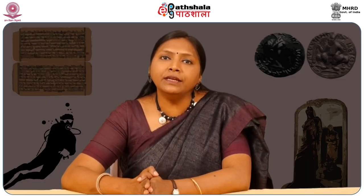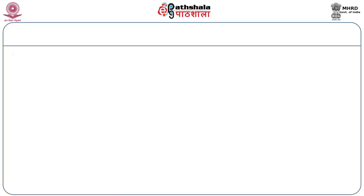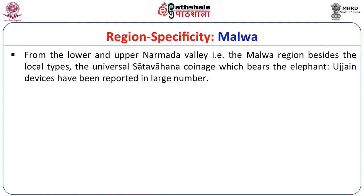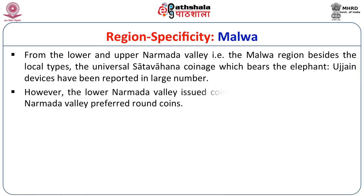Interestingly, the Satavahanas seem to have issued coins with a new weight standard, as their coins were considerably lighter than those of the Duttas. Moving to the territory of Malwa in Madhya Pradesh, from the lower and upper Narmada valley, besides local types, the universal Satavahana coinage bearing the elephant and Ujjain devices has been reported in large numbers. The lower Narmada valley issued coins in square shape while the upper Narmada valley preferred round shapes.